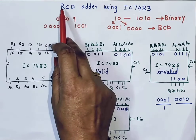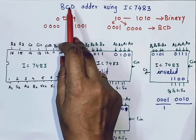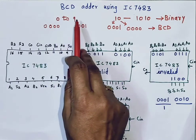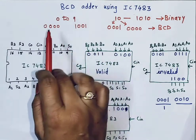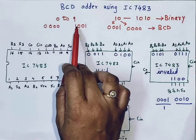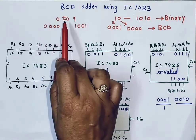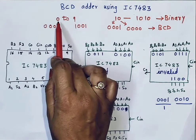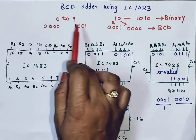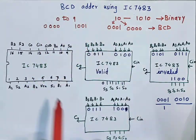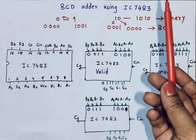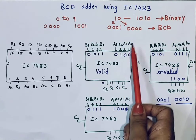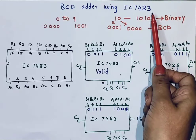BCD stands for Binary Coded Decimal. Basically these are decimal numbers from 0 to 9. We simply write the binary equivalent of those numbers — for 0 it is 0000 and for 9 it is 1001. So up to 9, the 4-bit BCD numbers and binary numbers are the same.